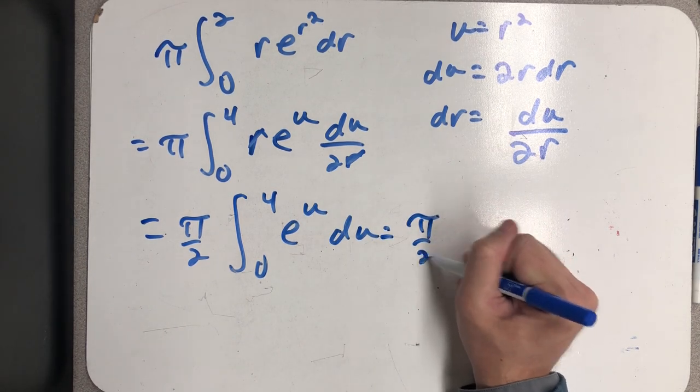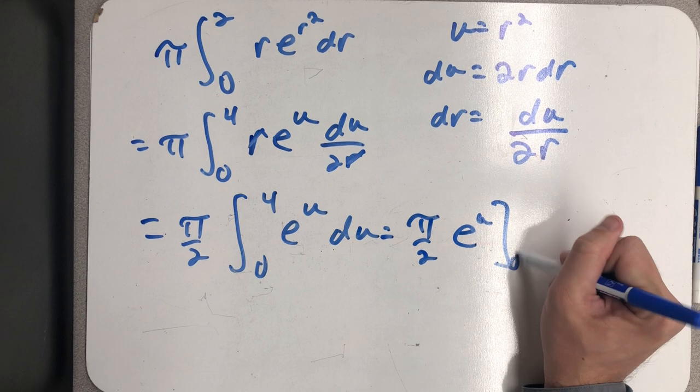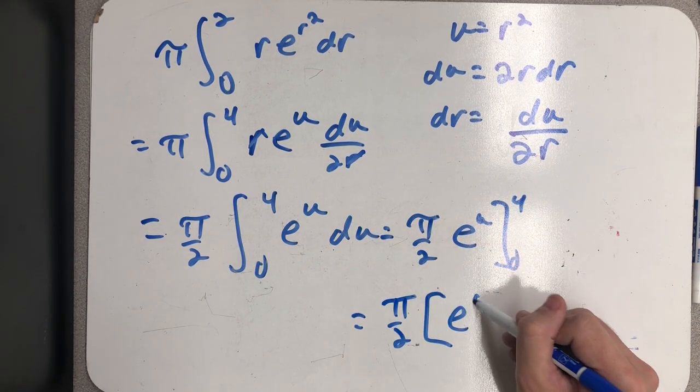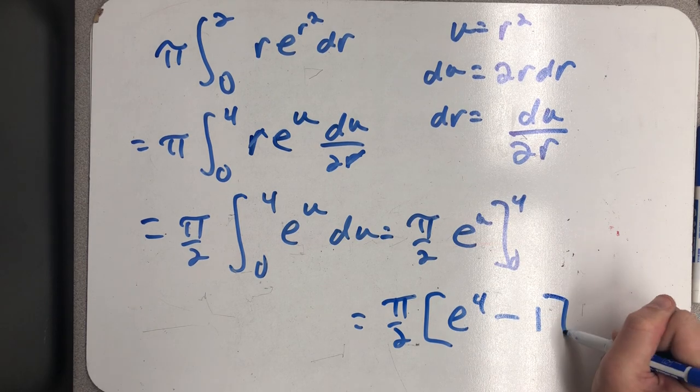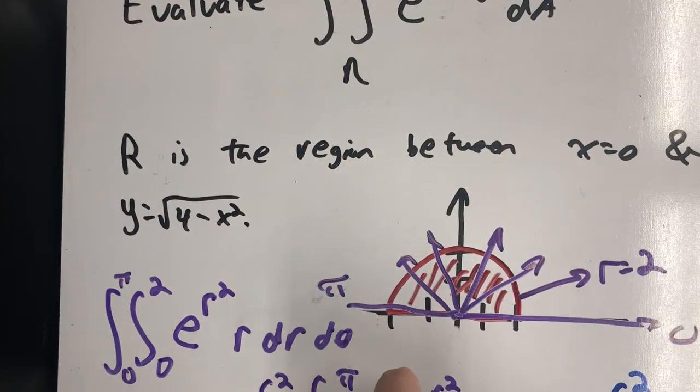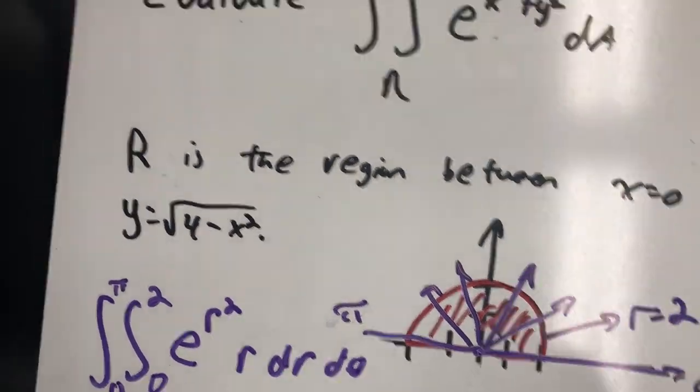Very simple antiderivative at this point. So I get pi halves and then e to the fourth minus 1, and there is my double integral of e to the x squared plus y squared over that semicircle.